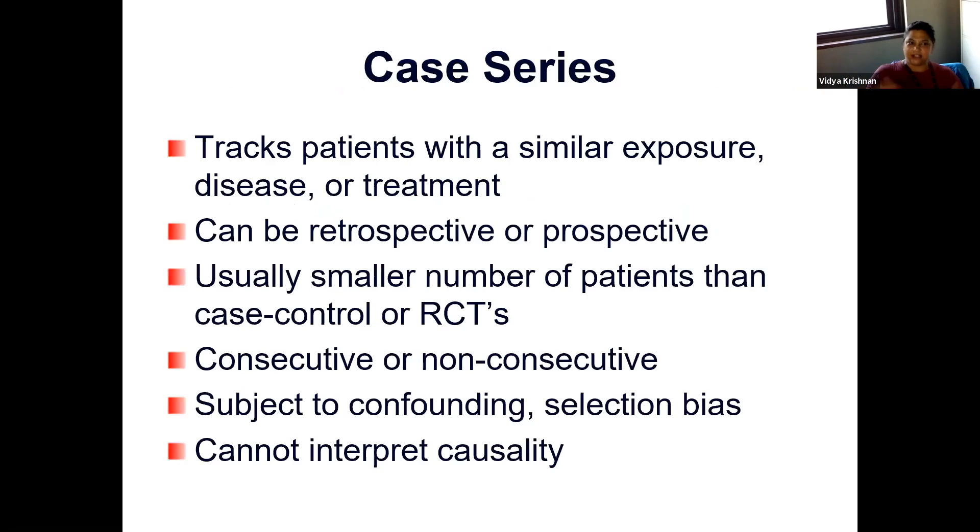The next level of evidence then is case series. When you have multiple patients with a similar exposure, disease, or treatment, you can start collecting their data together. It can be retrospective or prospective. Usually it's retrospective, but usually smaller numbers of patients than case control or RCTs. You really don't have a power calculation that you're working on to determine the number of patients. And often you're just limited by the number of patients you have available. They should be consecutive. If they're non-consecutive patients, there should be a reason why you're picking and choosing patients. And because if you're not comparing it to a standard group, they're collecting these patients and observing them. It's subject to confounding selection bias. And obviously you can't interpret any sort of causality.